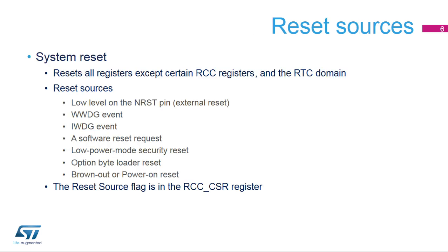The first type of reset is the system reset, which resets all the registers except certain registers for the reset and clock controller. It also does not reset the RTC domain. The system reset sources are the external reset generated by a low level on the NRST pin, a window watchdog event, and an independent watchdog event.